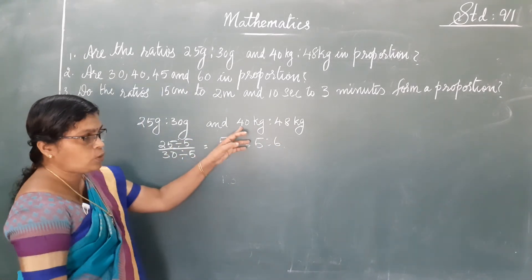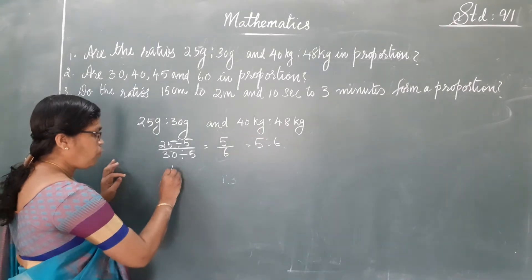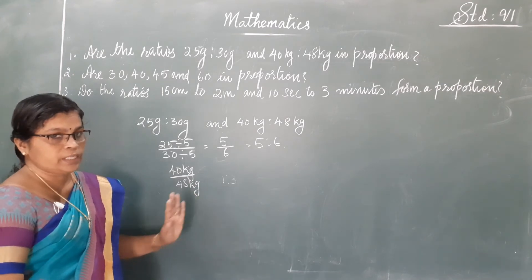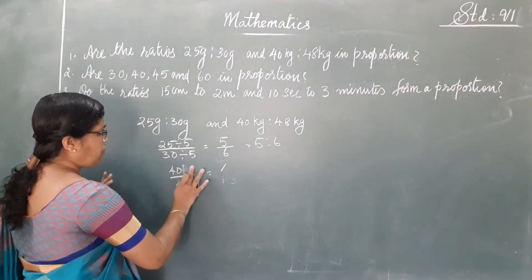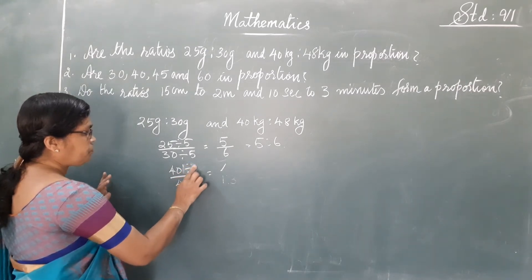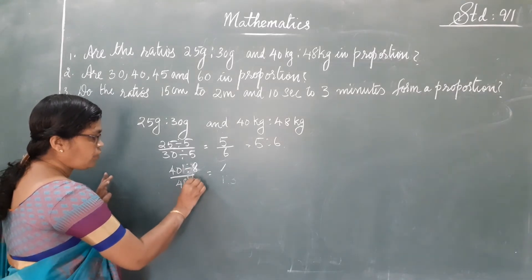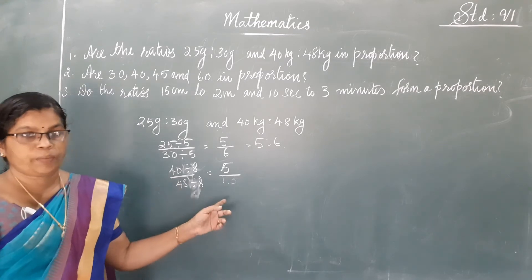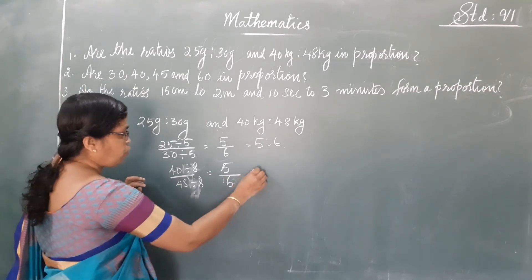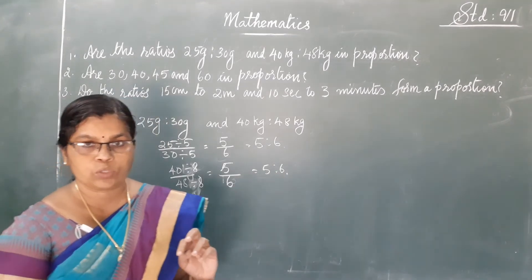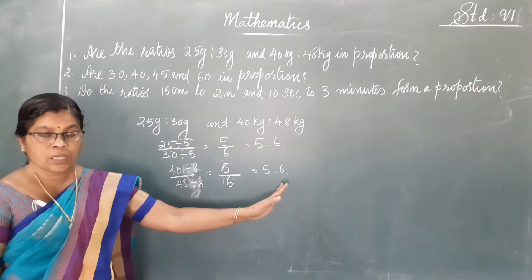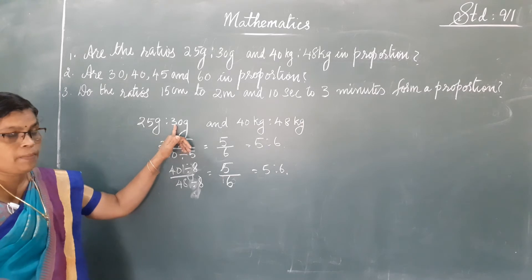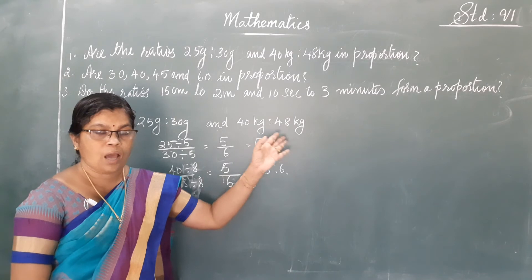We got 5 is to 6. Now for 40 kilogram to 48 kilogram — both are in kilogram, so we can find the ratio. 40 divided by 48 — dividing both by 8 — gives 5 is to 6. Both ratios are 5 is to 6, so these two ratios are same. Therefore, 25 gram is to 30 gram and 40 kilogram is to 48 kilogram are in proportion.